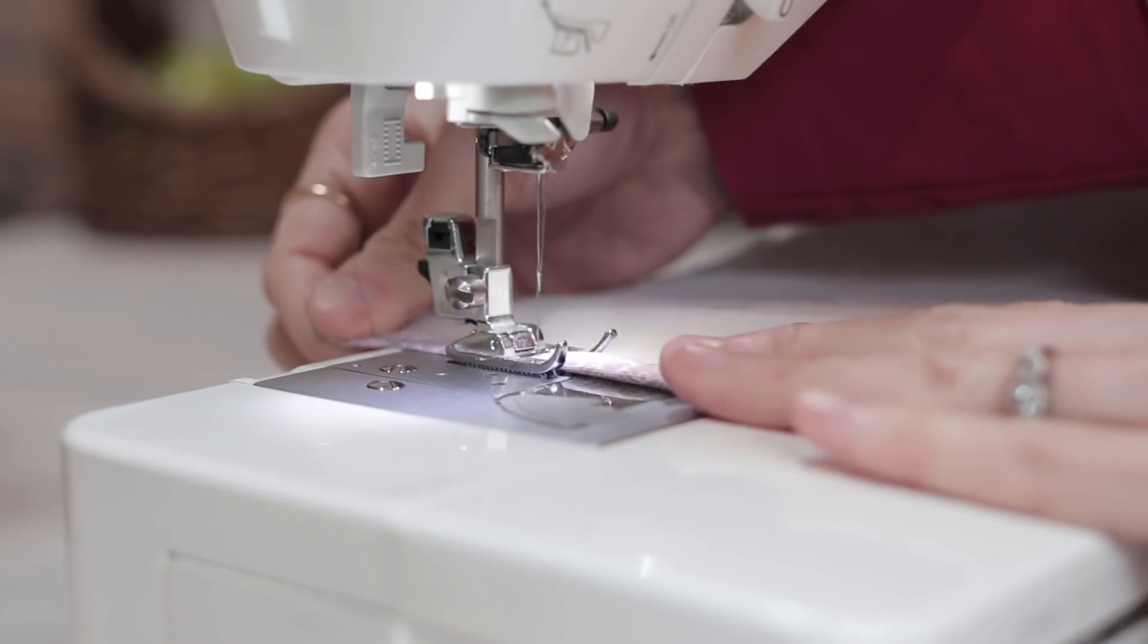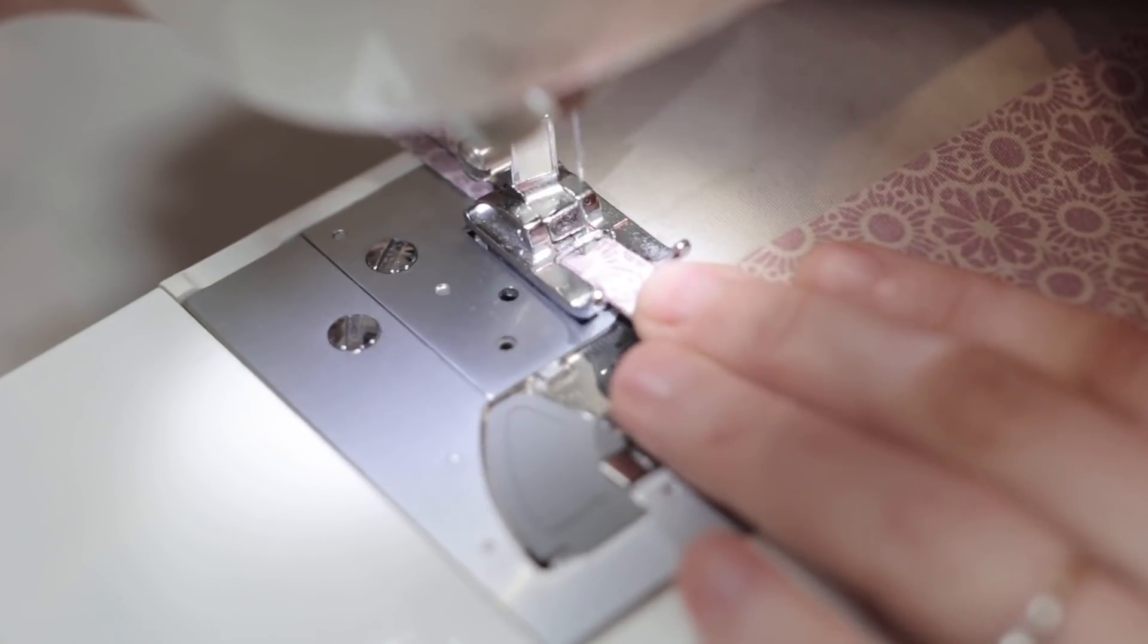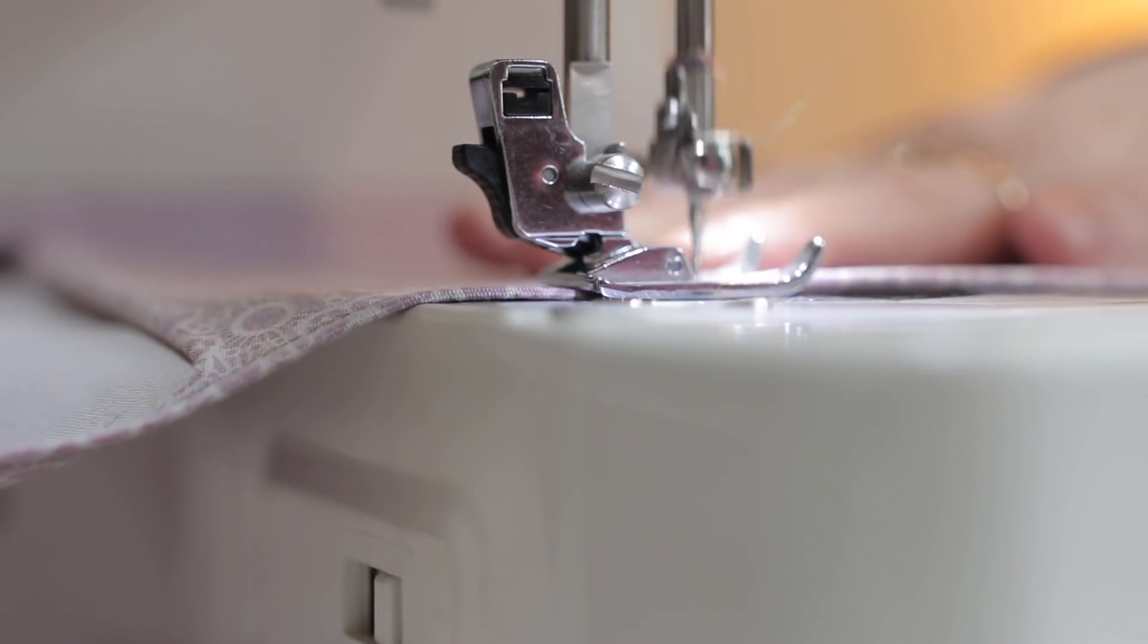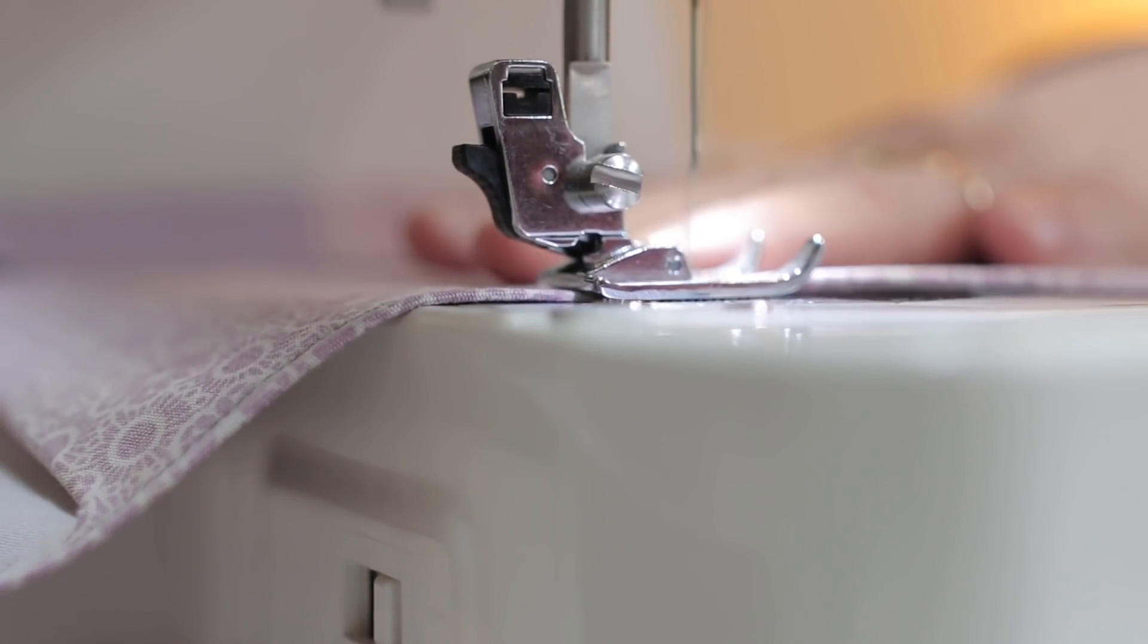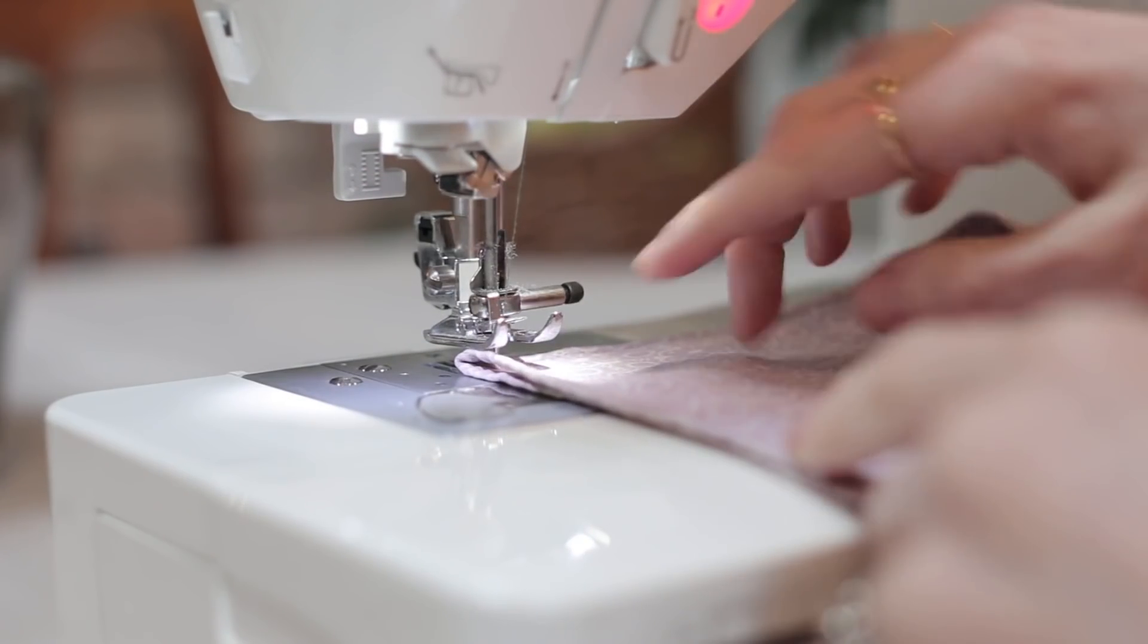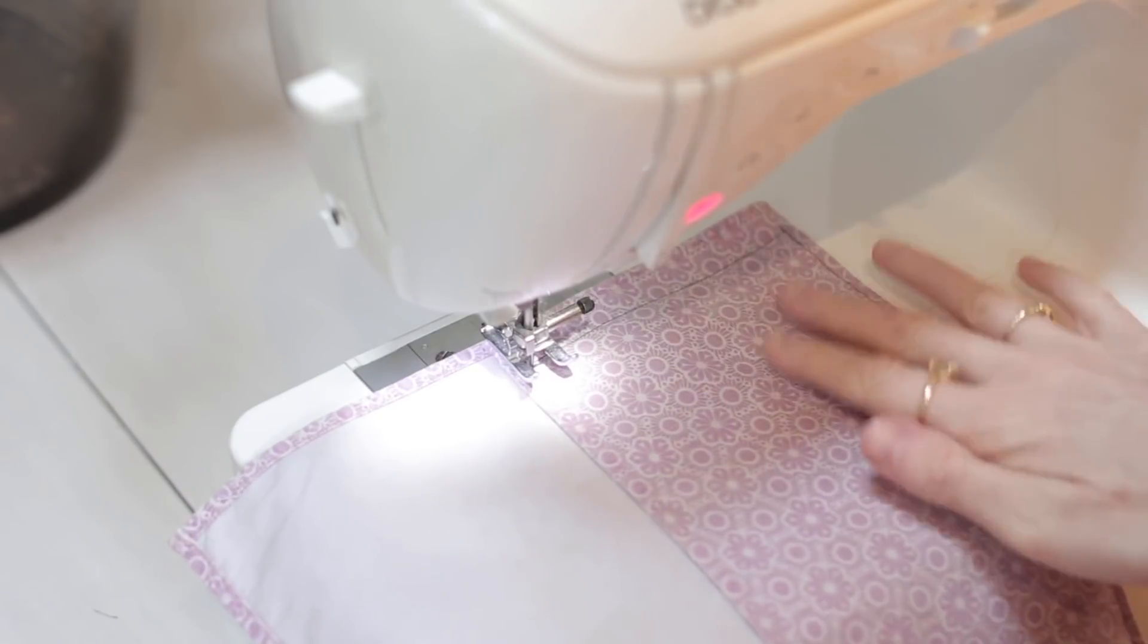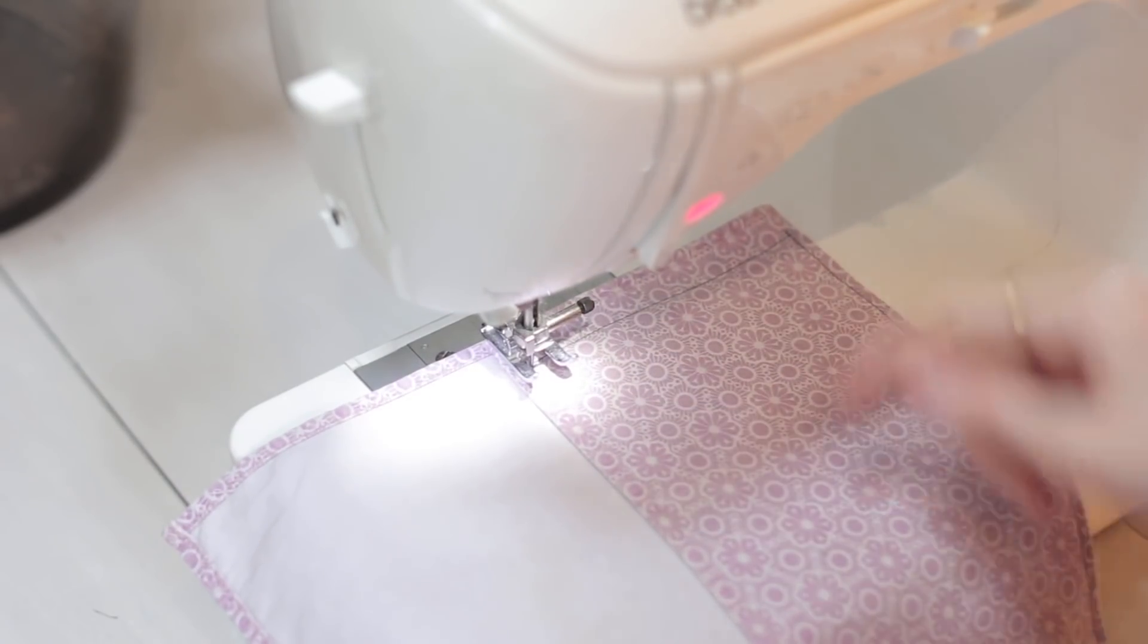Straight onto the sewing machine, or you can do this by hand, and go from the top all the way down to the bottom, leaving about half an inch at the end. When you get there, spin it around, head across the bottom, spin it around half an inch from the edge, and all the way up to the top.